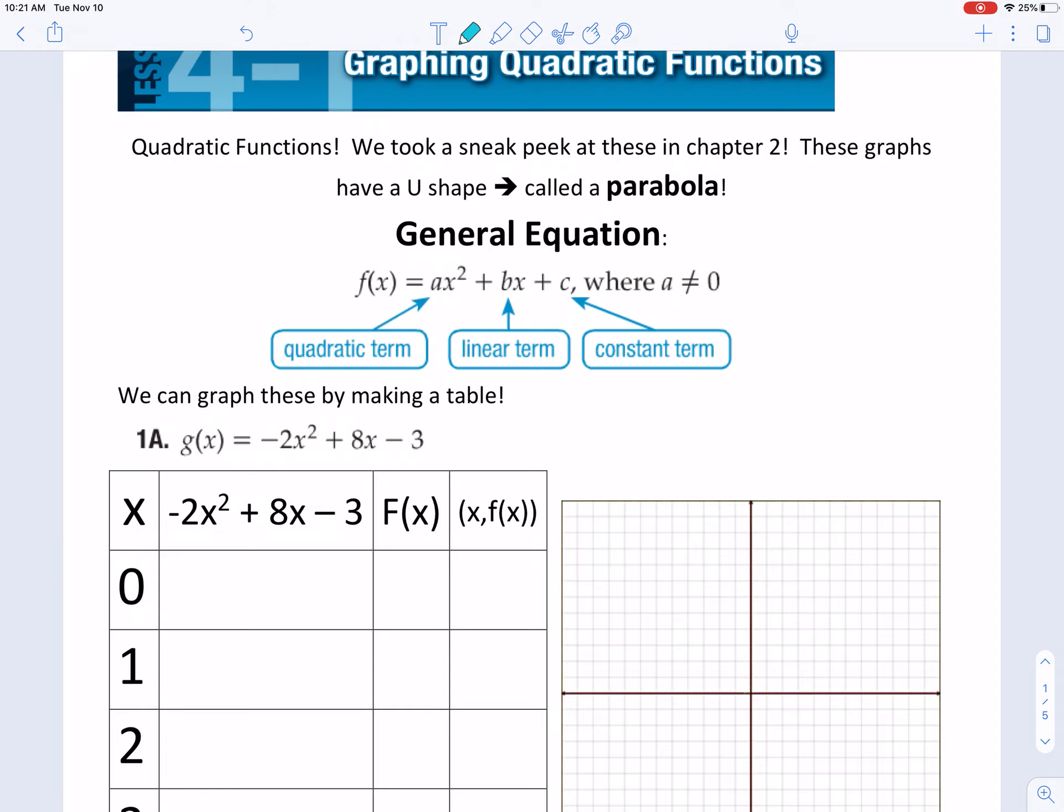4-1 is going to be all about quadratic functions, and if you remember, we kind of saw a sneak peek of these in Chapter 2. They graph to be these U shapes. By the way, it will always be either a U up or a U down. It's never going to be a U sideways, and the reason for that is it wouldn't be a function. Think about that vertical line test. It crosses the parabola twice, so that's not a function, so they will always open up or down.